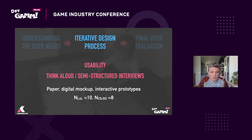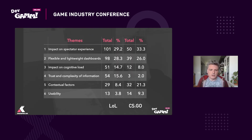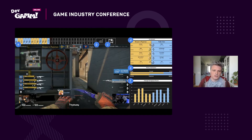We used paper prototypes first, then digital mock-ups that weren't interactive but were visually more polished, and finally interactive prototypes working with real game data. The final user evaluation had 18 participants. We used semi-structured interviews, eye tracking to see which parts of the screen caught their interest and whether they were looking at the game, and an inductive thematic analysis of the entire interview transcriptions. From the analysis came interesting themes: impact on spectator experience, need for flexible and lightweight dashboards, cognitive load, trust, complexity of information, contextual factors, and usability.